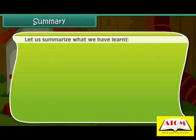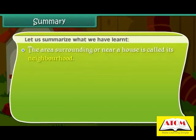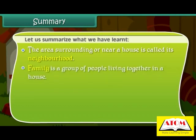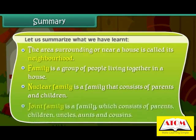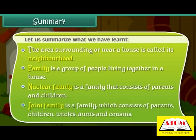Let us summarize what we have learned. The area surrounding or near a house is called its neighborhood. Family is a group of people living together in a house. Nuclear family is a family that consists of parents and children.